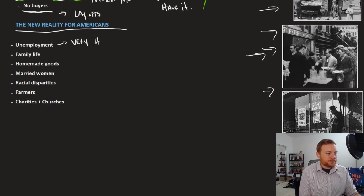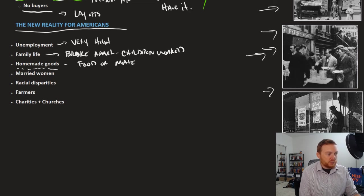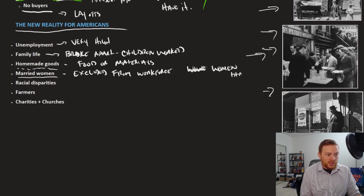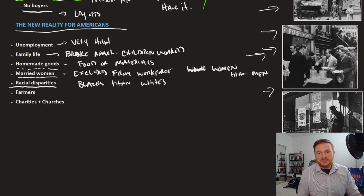Just going to kind of go down the list here of how people experienced it. Of course, unemployment was very high. It even went down to affect family life. Families broke apart. Children were forced to work. People made homemade goods, whether that was food or materials, because you can't buy anything. A lot of people are unemployed. A lot of people are losing their homes. Married women especially found it incredibly difficult to find a job. Married women probably more than anybody else were excluded from the workforce. Generally speaking, it was more difficult for women than men to find work. And there were also racial disparities. So it was much worse for blacks than whites. Everybody felt the Depression, but different constituencies felt the Depression to different degrees.